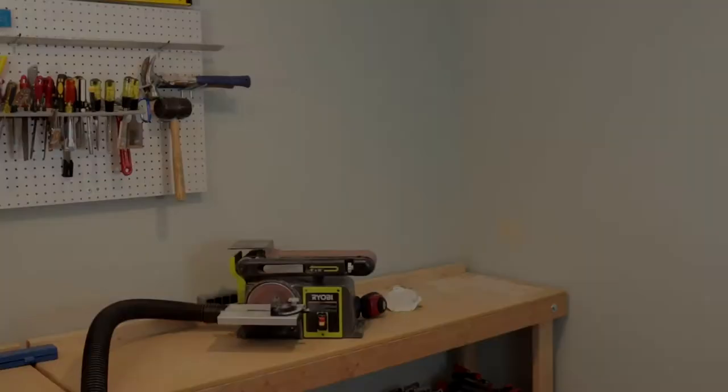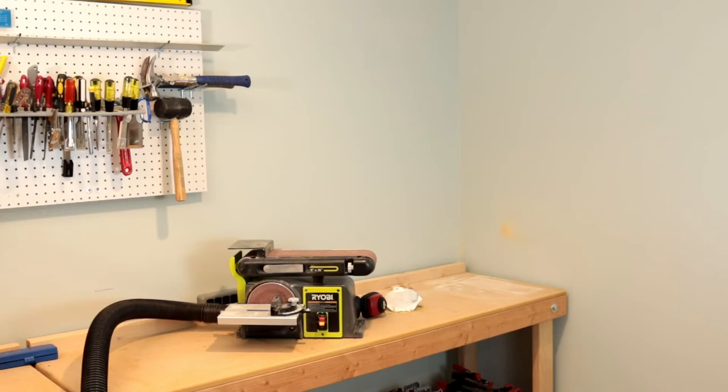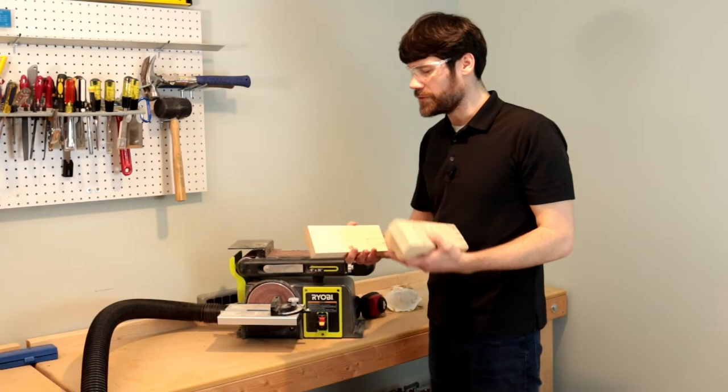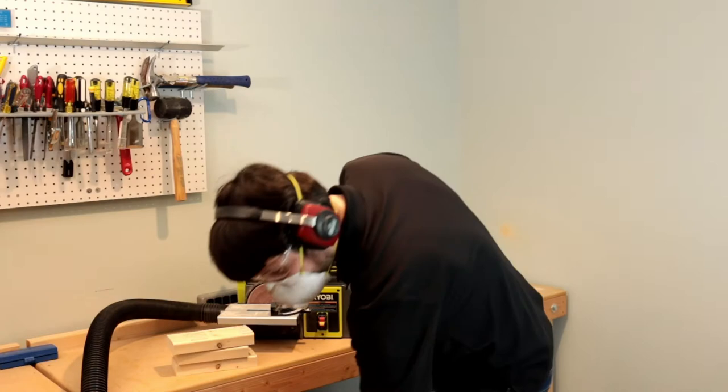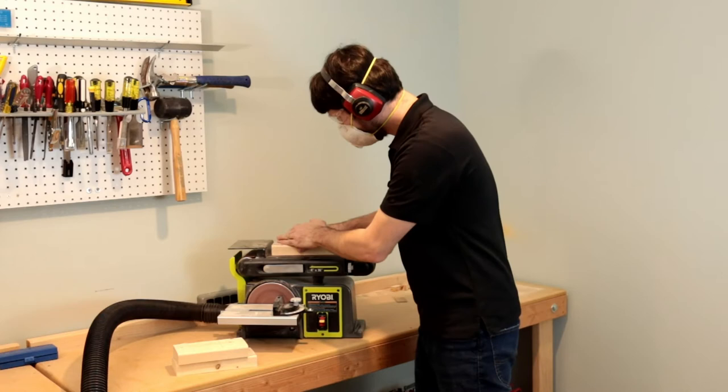This next part is over on the belt sander. We're going to clean up the rough sides that came out of the bandsaw. It's going to get a little dusty, so we're going to use dust collection and a face mask. You're going to want to apply even pressure as you move the workpiece over the belt sander, trying to remove any of those gouges that the teeth from the bandsaw made.